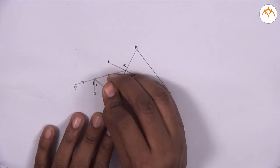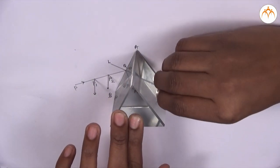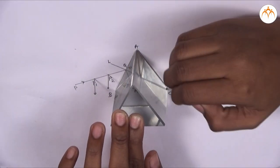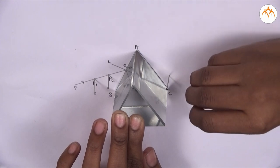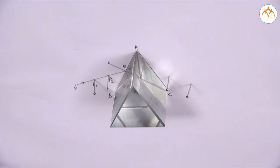Place the prism back on ABC. Look at the images of P1 and P2 through side AC. Fix two more pins P3 and P4 on this side such that pins P3 and P4 and the images of P1 and P2 appear to be on a straight line.